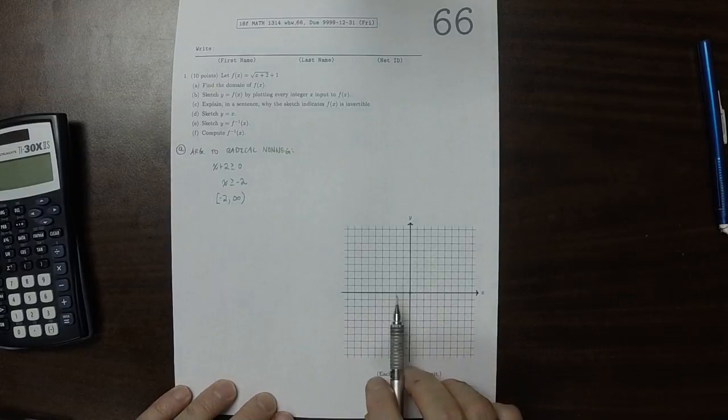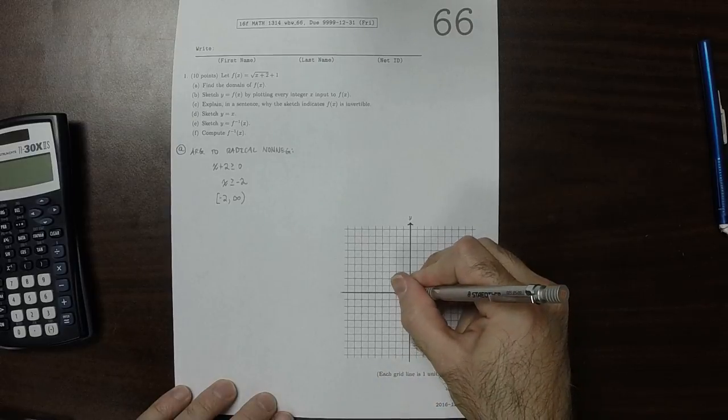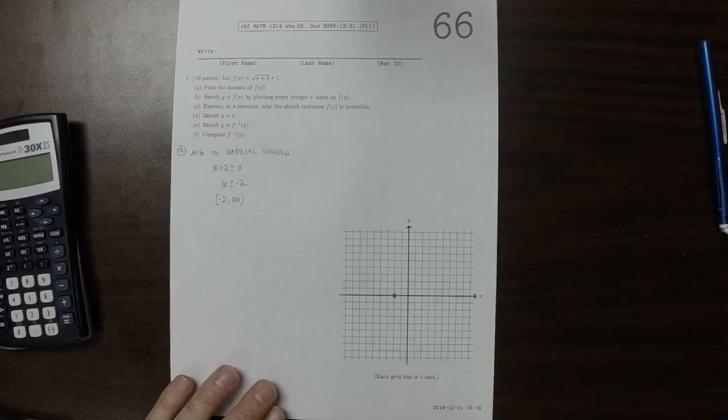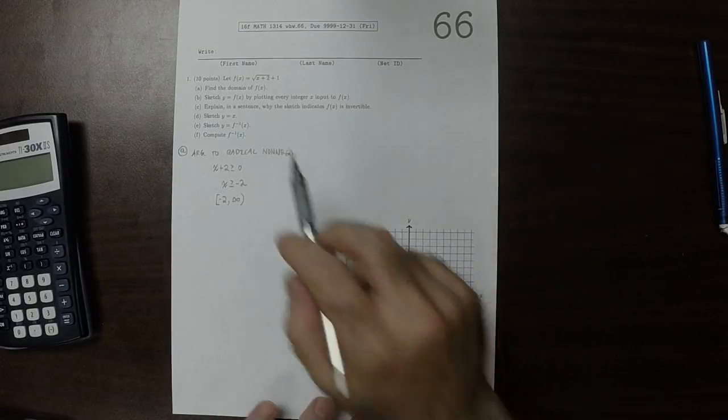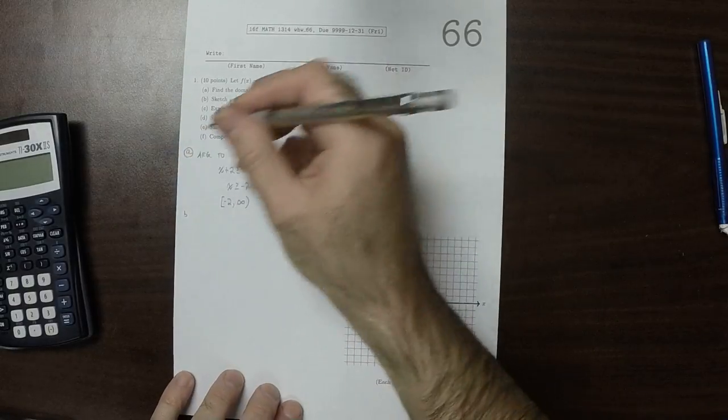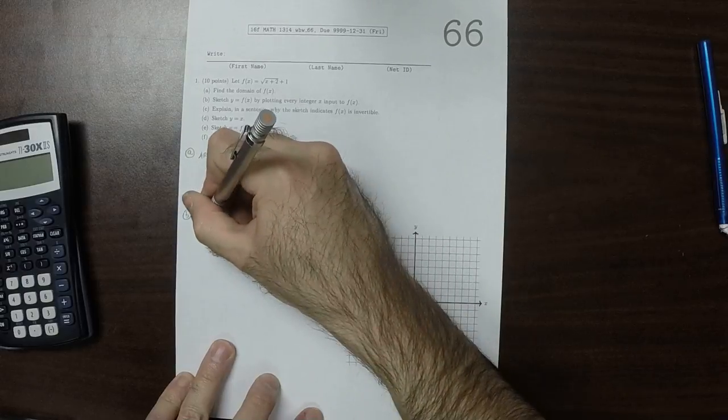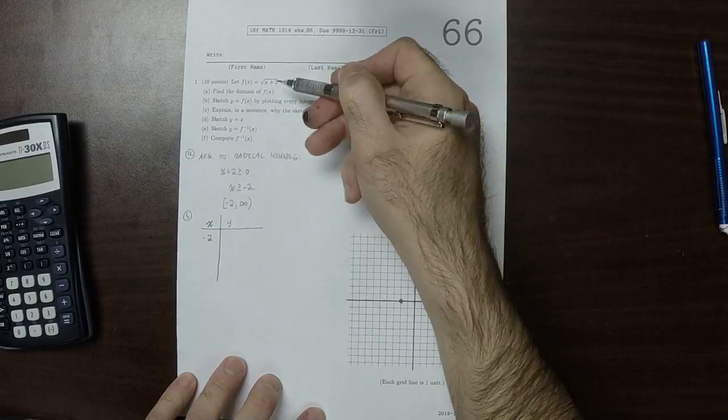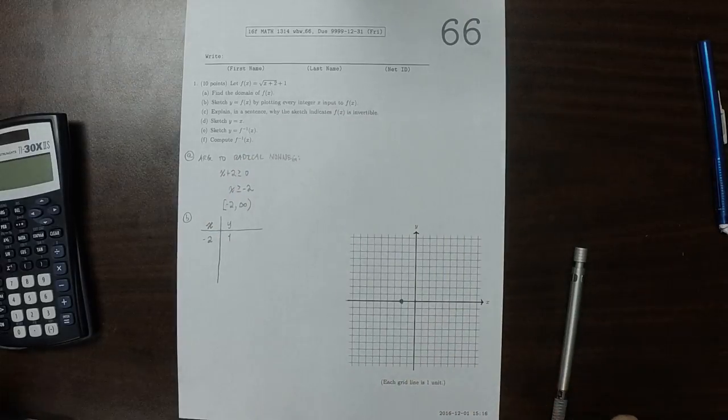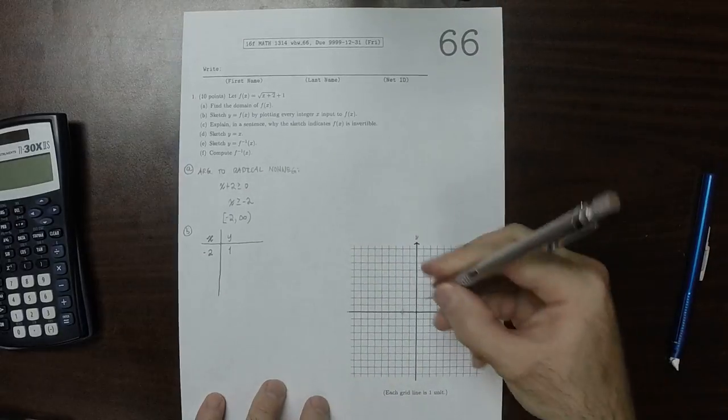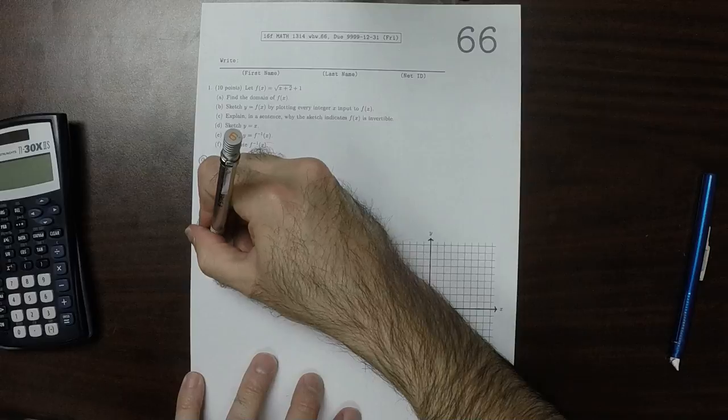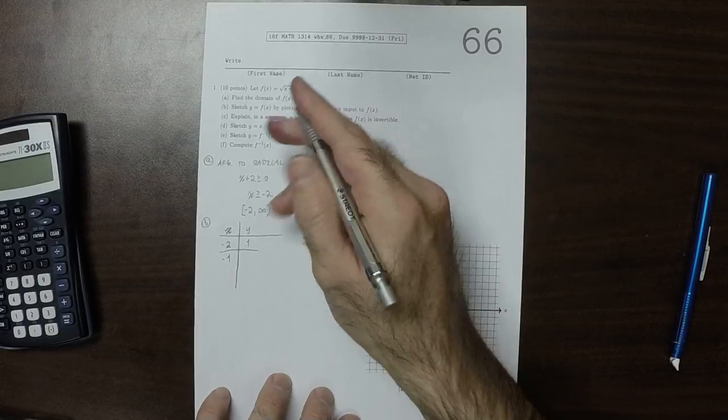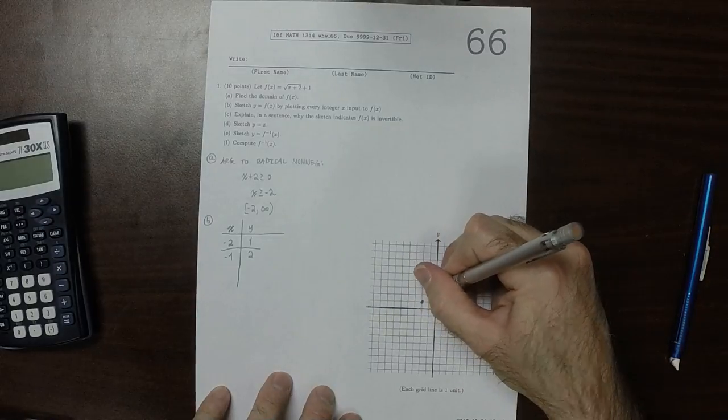Okay, sketch by plotting every integer input. So we can plug in negative 2. If we plug in negative 2, we get 1. So the first point we plotted is that one. If we plug in negative 1, that would be 1. So negative 1 plus 2 is 1, square root of that is 1, so 1 plus 1 is 2.